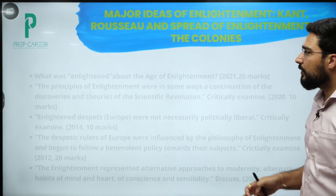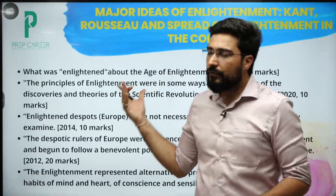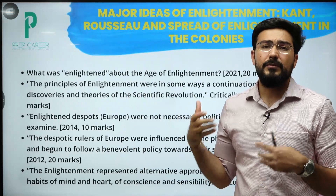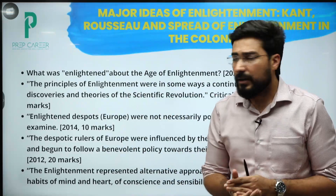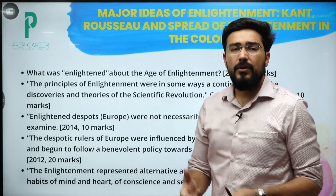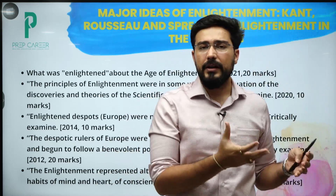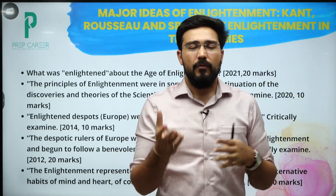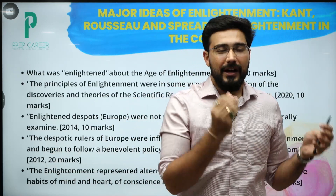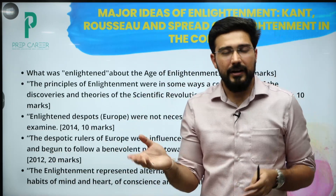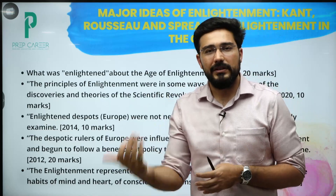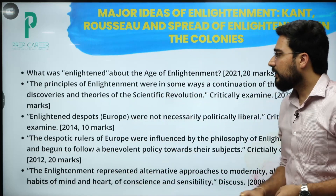Let us now look at previous year questions. In the first category they are asking the basic idea of what is the meaning of enlightenment — like what was enlightened about the age of enlightenment. There is a controversy: Voltaire talks about enlightenment, but Immanuel Kant says Voltaire was living in the age of enlightenment but the age itself was not enlightened. Modern ideas had come but application was lacking — this is the meaning you can understand.